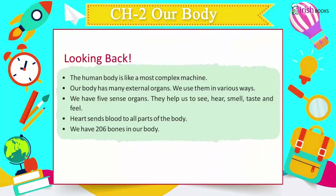Looking back: The human body is like the most complex machine. Our body has many external organs and we use them in various ways. We have five sense organs — they help us to see, hear, smell, taste, and feel. The heart sends blood to all parts of the body.